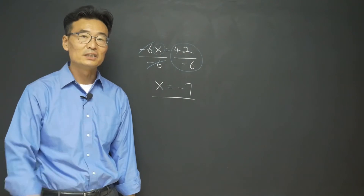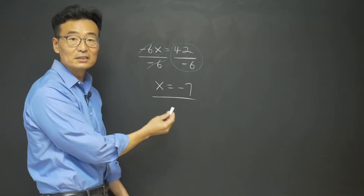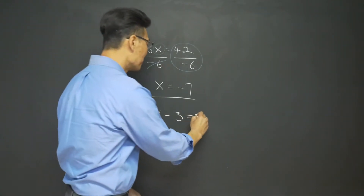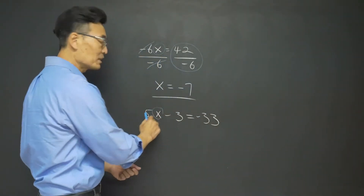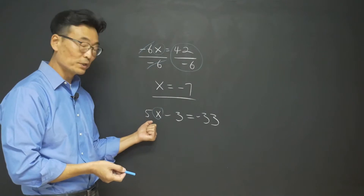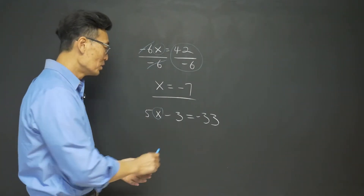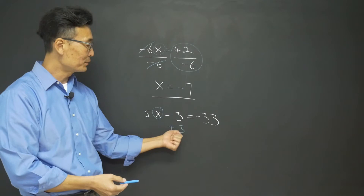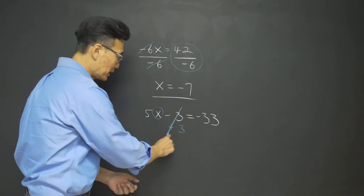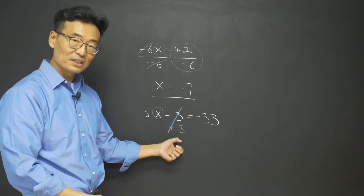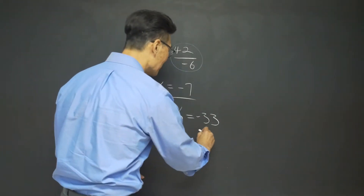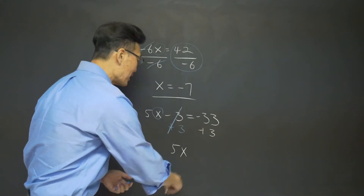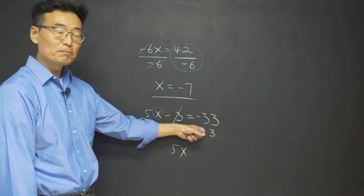Here's another example with one additional step: 5x minus 3 equals negative 33. We want to solve for x, but this time we don't divide by 5 first. Instead, we get rid of the negative 3 by adding 3 to both sides, because negative 3 and positive 3 cancel each other out. Whatever you do on the left side, you do the same on the right side.